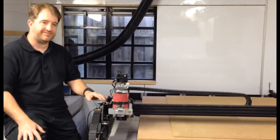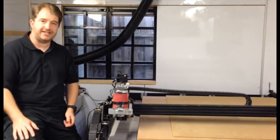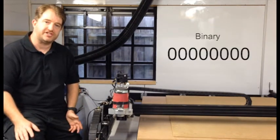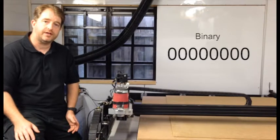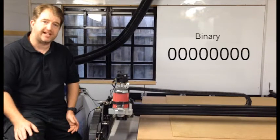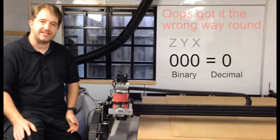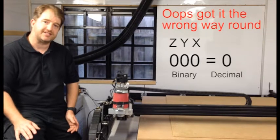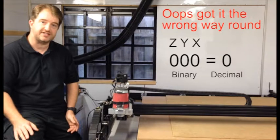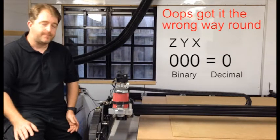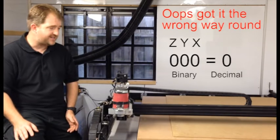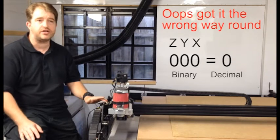Simply put, a binary number is eight digits long, each digit is either zero or one. For this we are only going to use the last three digits. Now the very last digit is your Z-axis, the second to last is Y-axis, and the third to last is the X-axis.